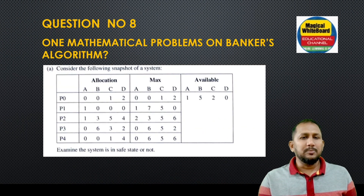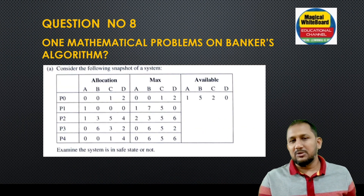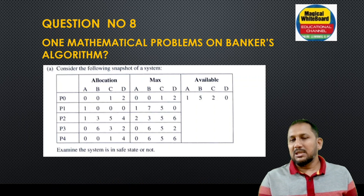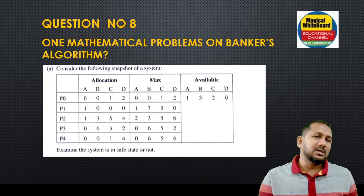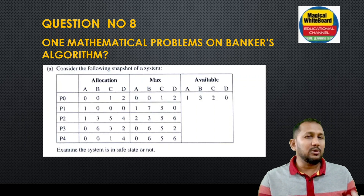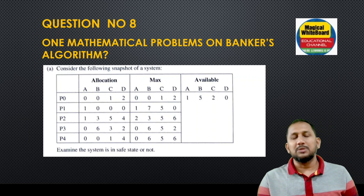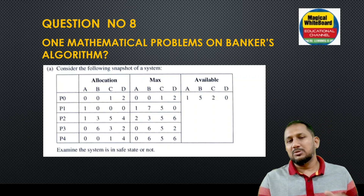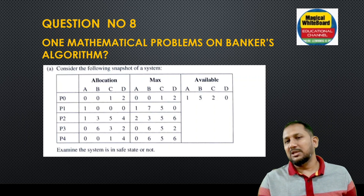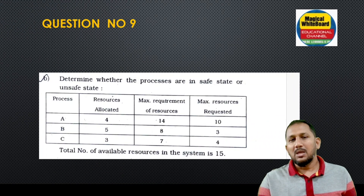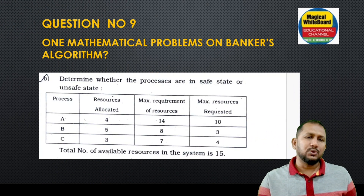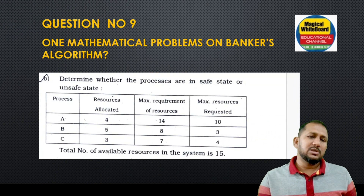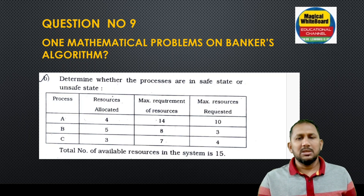In the Banker's algorithm, it is very important to check the process. You need to check the allocation matrix, max matrix, and need matrix. It is very important to solve and check the safe sequence. This is the Banker's algorithm for deadlock avoidance.